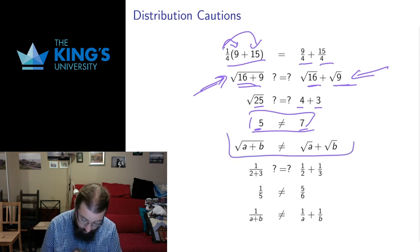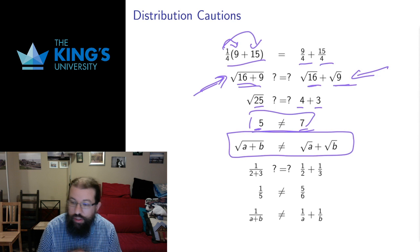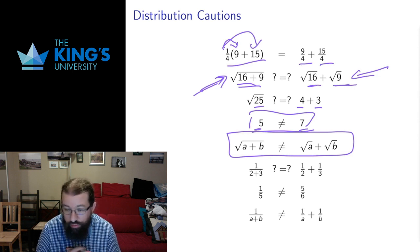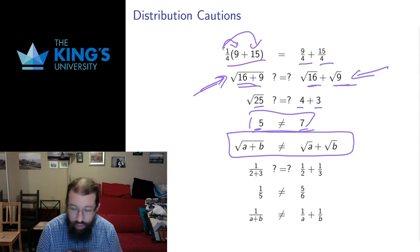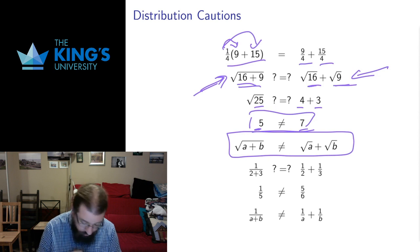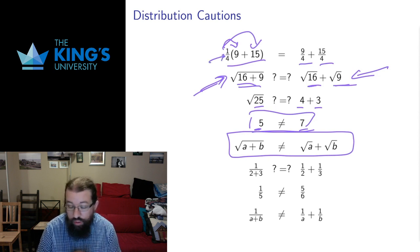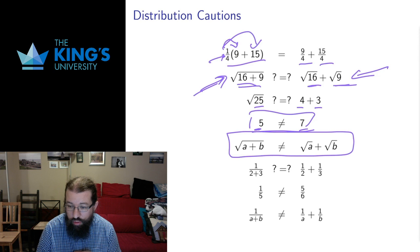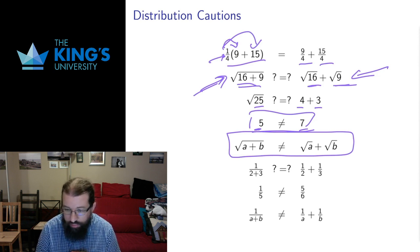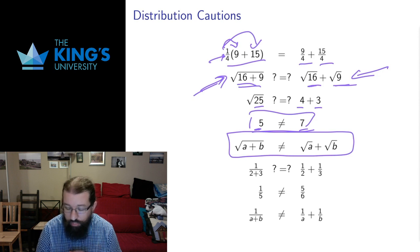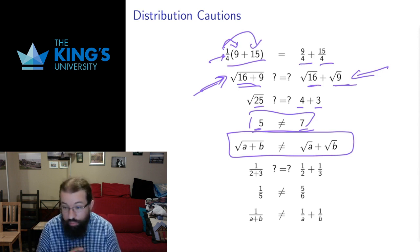If I want to state this generally, I'll state it this way. We typically cannot distribute square roots. Square roots don't break up over addition and subtraction the way that this division broke up very nicely over addition and subtraction. So this is just a caution to be careful about the things that you want to break up over addition and subtraction. The things that look like they might distribute, square roots certainly don't.